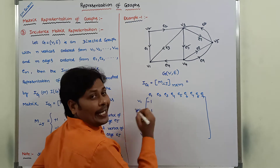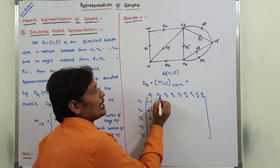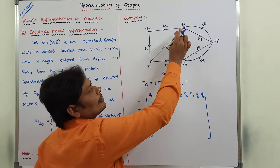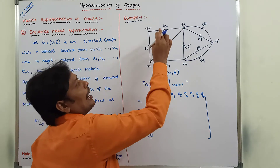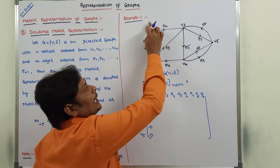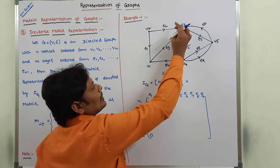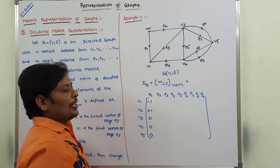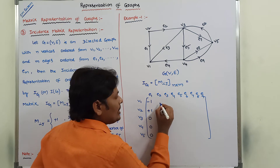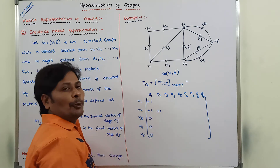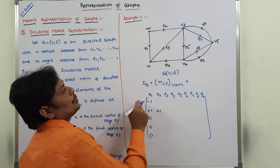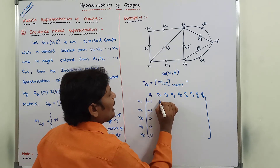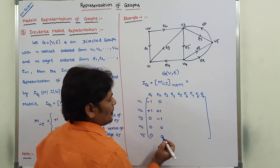Next, for edge E2 in column 2: edge E2 is incident on V2 and V3. Edge E2 starts from vertex V2 and ends with vertex V3. So we put plus 1 at vertex V2 and minus 1 at vertex V3, and the remaining places get 0.